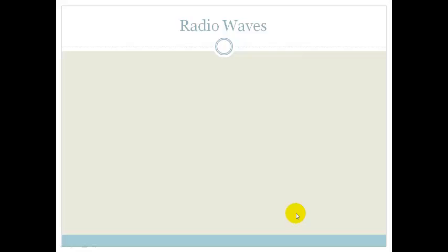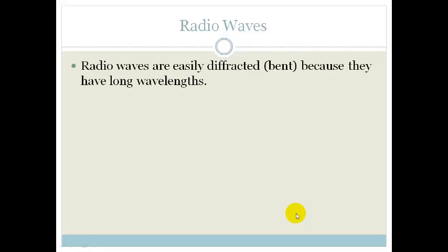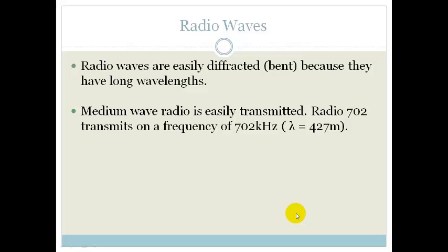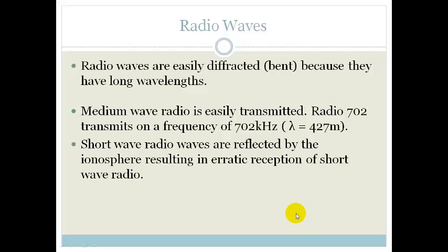Radio waves — please understand that this is not sound. Radio waves are just really long transverse waves and are easily diffracted or bent around objects because of their long wavelengths. For example, radio 702 transmits on a frequency of 702 kilohertz, which is a wavelength of 427 meters — substantially longer than the few centimeters of microwaves. Short wave radios are reflected by the ionosphere, resulting in erratic reception, so we don't really use short wave radio when listening to the radio.